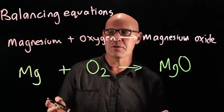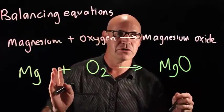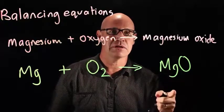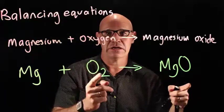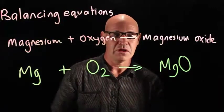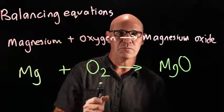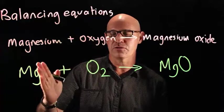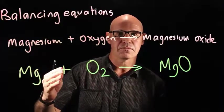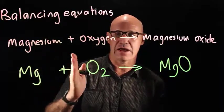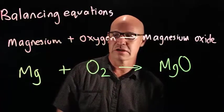You need to be aware that there's no way you're going to be able to balance an equation correctly if you don't get your molecular formulas correct. So you need to be crossing over etc. Now what we do is go through and have a look at each of the molecules on the reactant side and compare it to the product side.